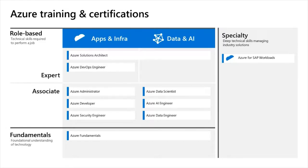Previously you had to travel to a certification exam center — sometimes two, three, or five hours to the closest city. Now they've simplified the process where you can sit in your own convenient place and take the exam, with a clean room and clean desk area. The online proctor monitors you over webcam. The only requirement is no one is around you — perfect for sitting in your home away from Covid-19.